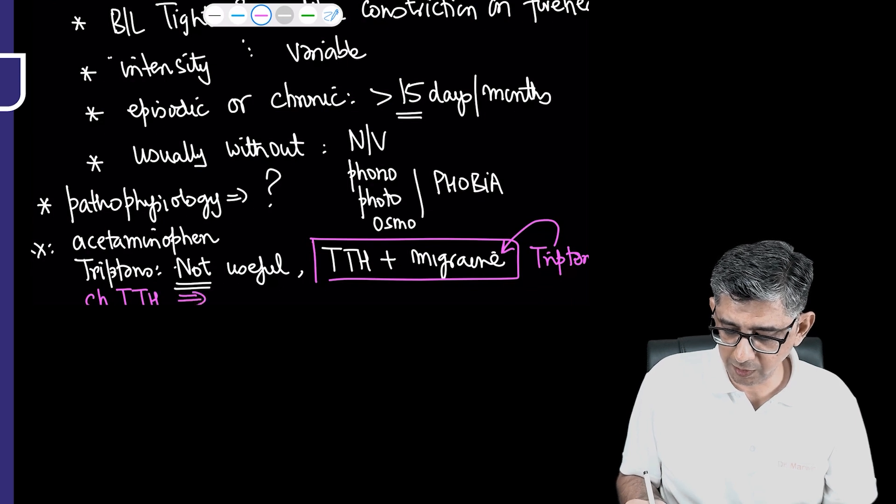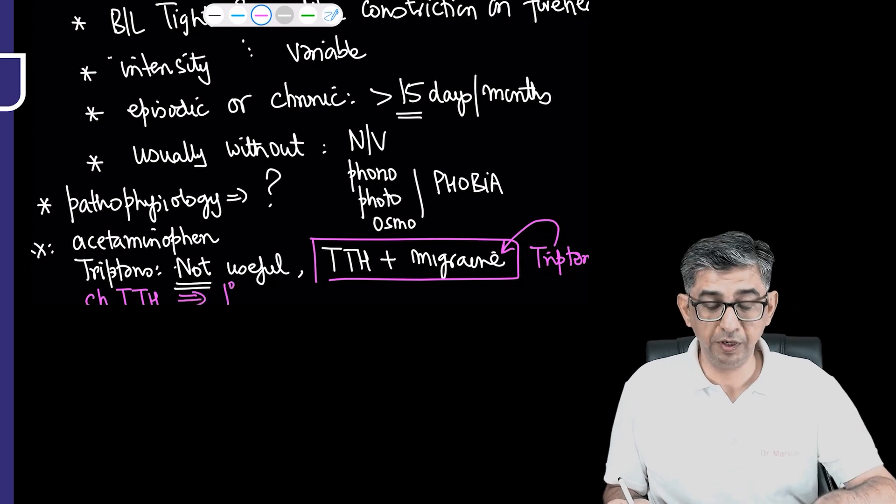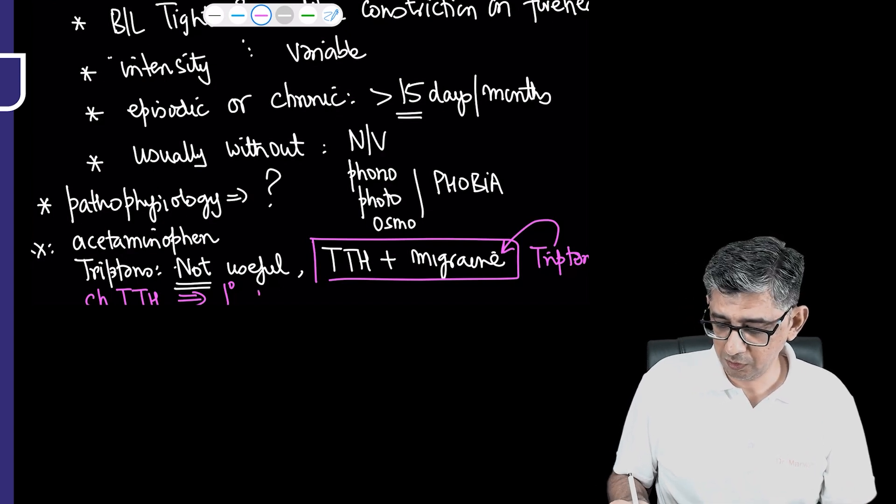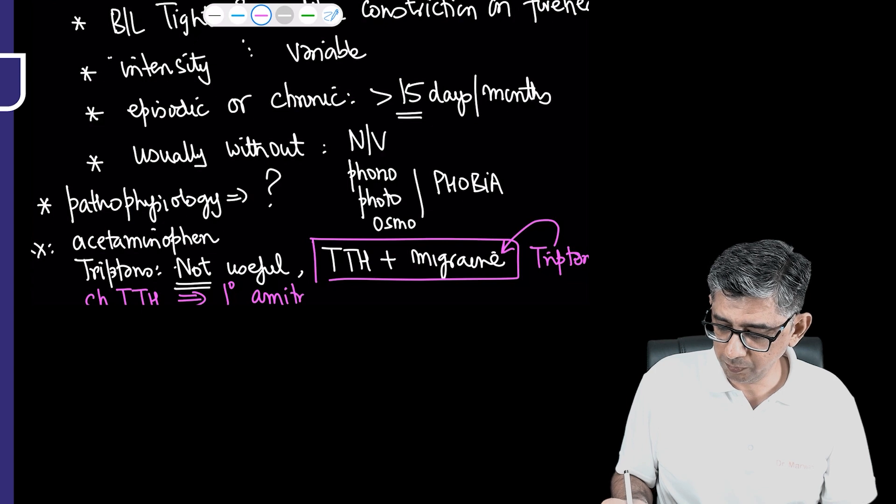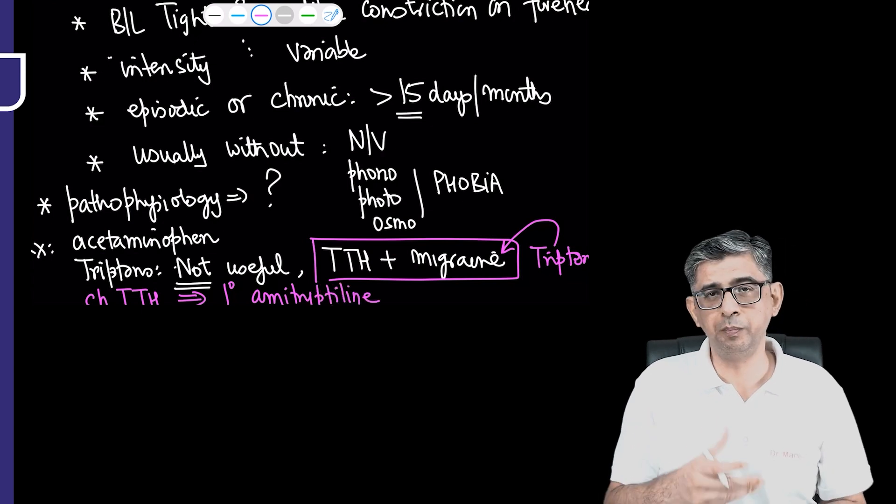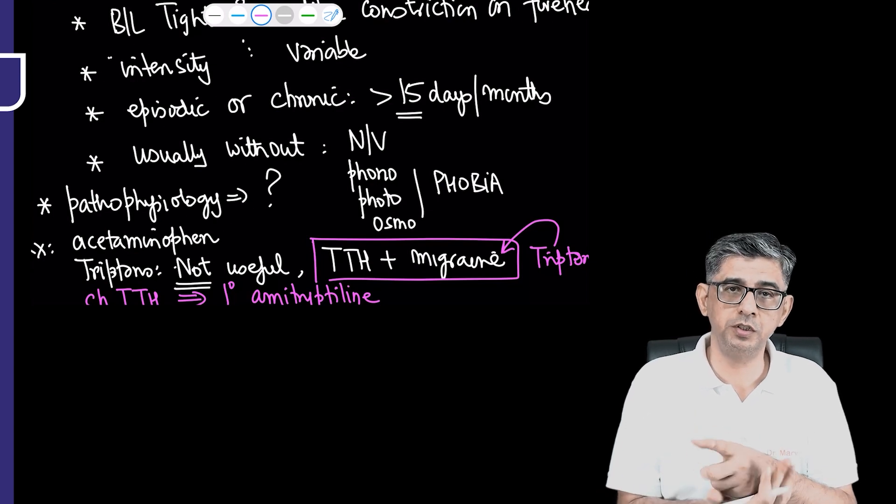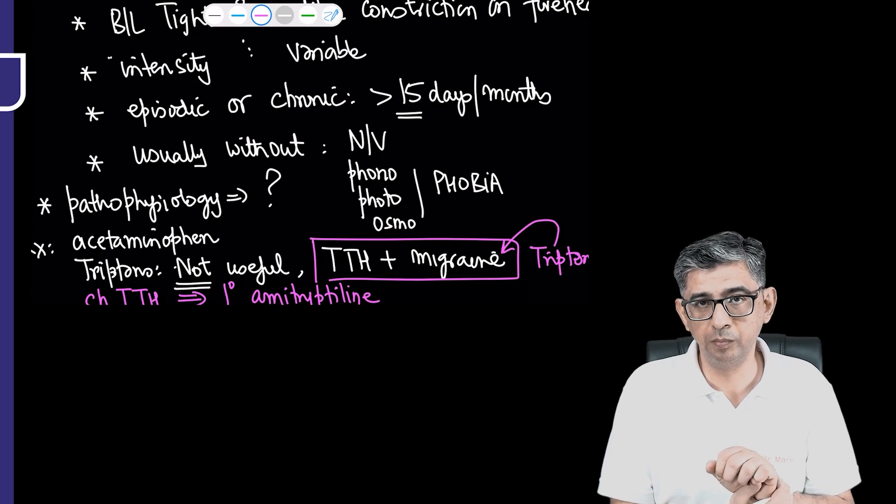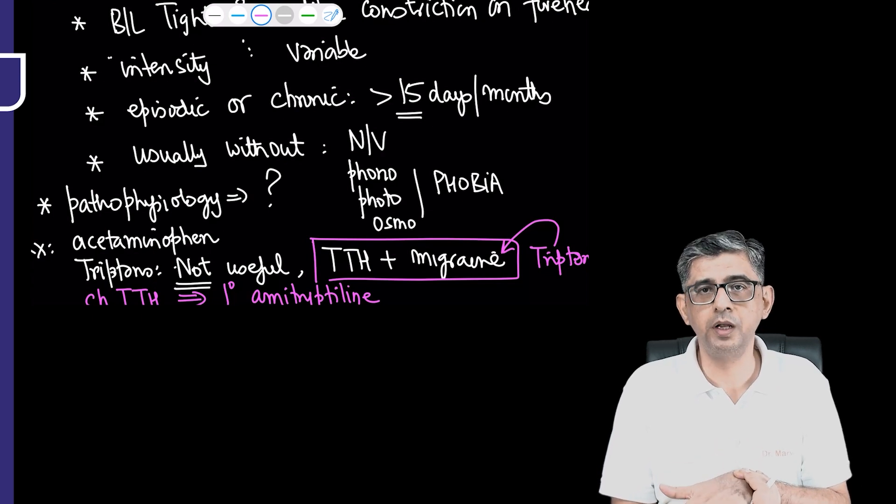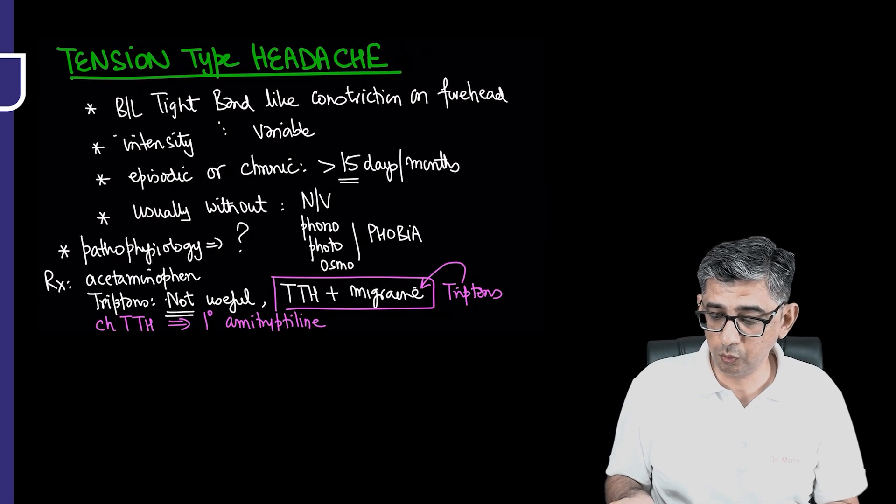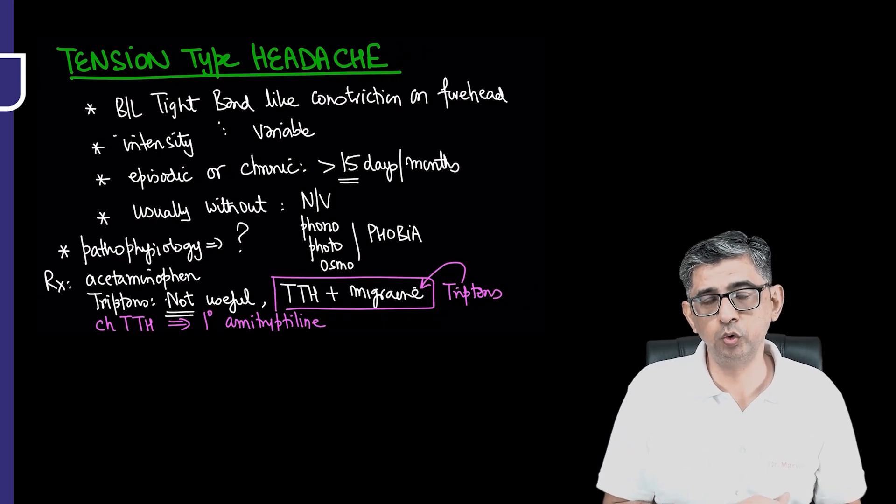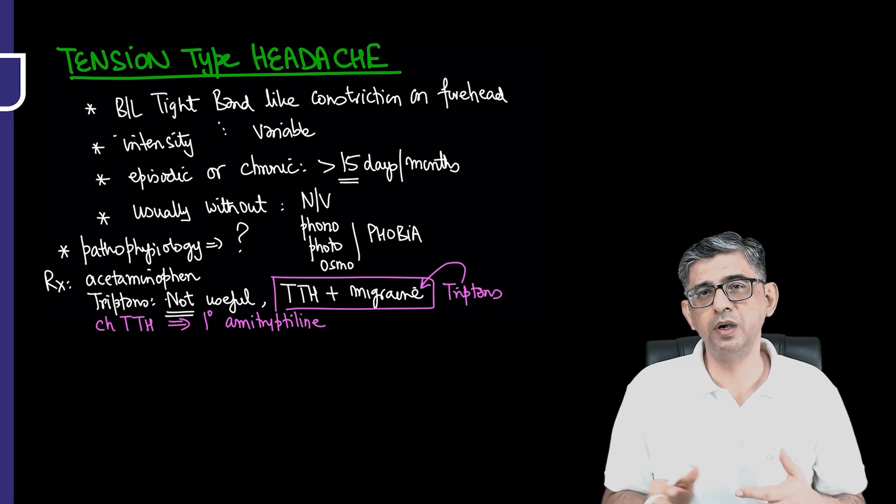The last point for this video: if a person is having chronic tension type headache where a person has 15 days a month of headache that's hampering personal and professional life, then the only proven treatment for chronic tension type headache is amitriptyline. Tryptomer is the common brand name that you use even in sciatica patients. The same molecule, 10 milligram, can be started even in patients having tension type headache but only if it is of the chronic variety.